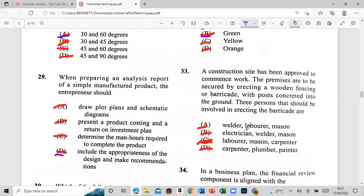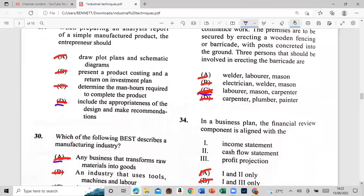33: a construction site has been approved to commence work. The premises are to be secured by erecting a wooden fence or barricade, which was concreted into the ground. Three persons that should be involved in erecting the barricade are: is it the welder, laborer, mason, electrician, welder, mason, laborer, mason, carpenter, or carpenter, plumber, painter? Which of those guys? And that would be C: laborer, mason, and carpenter. Guys, we're going to get them right. So let's see if we're going to get them right. 34.